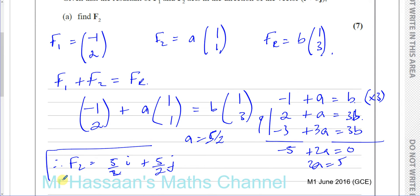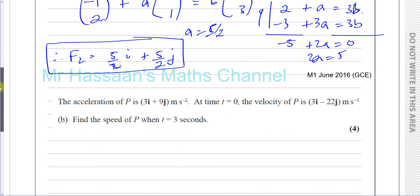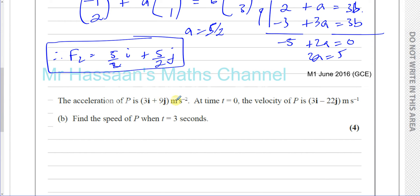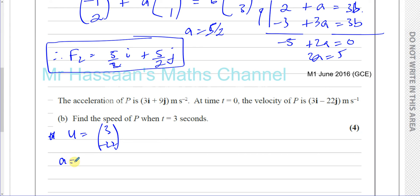Part B says the acceleration of P is 3i plus 9j metres per second squared. At time equals 0, the velocity of P is 3i minus 22j metres per second. Find the speed of P when t equals 3 seconds. So we have initial velocity (3, −22), acceleration (3, 9), and time of 3 seconds. We could use v equals u plus at since this is constant acceleration.